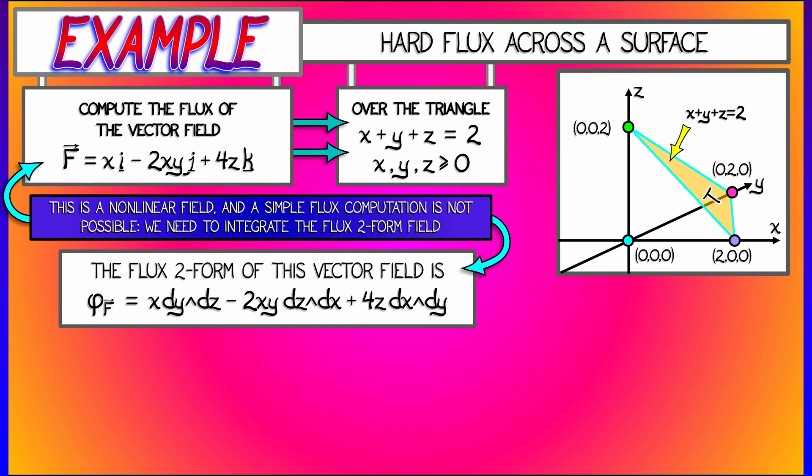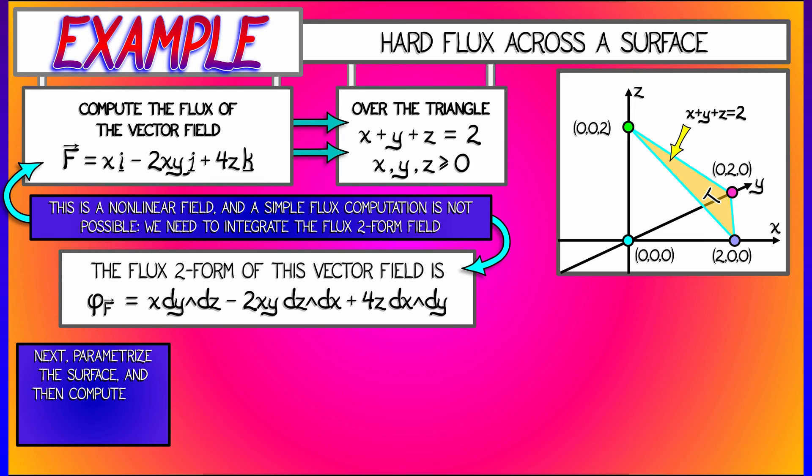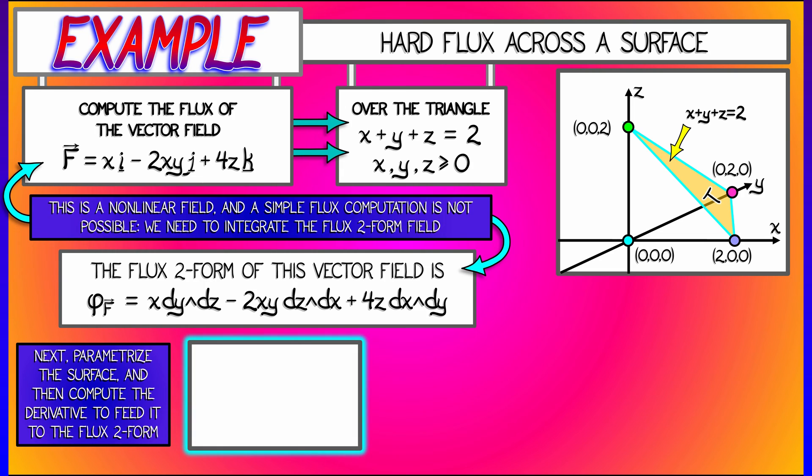Now, the next thing that we're going to have to do is parametrize this surface. It's not so bad, but it's going to take some notational effort. Let's say our parametrization is g. It depends on two parameters, s and t, and we simply use the graph of this plane.